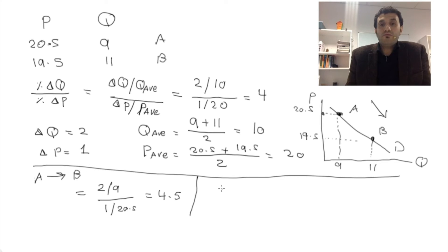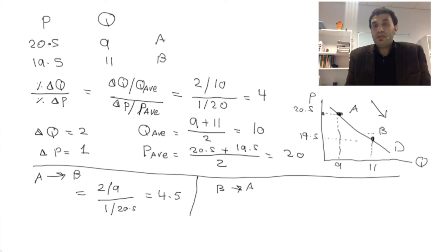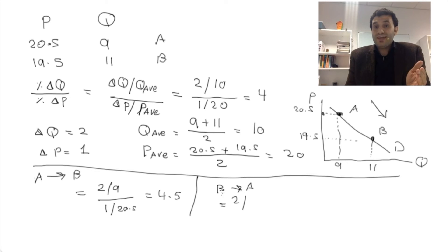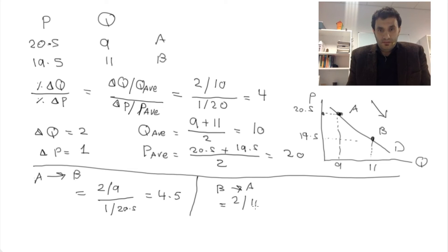Now, what if we moved from B to A — meaning the price was 19.5 and then increased to 20.5? In this case, B is the original point, so the original quantity is 11 and the original price is 19.5. The change in quantity is 2 divided by 11, and the change in price is 1 divided by 19.5, giving an elasticity of 3.6.